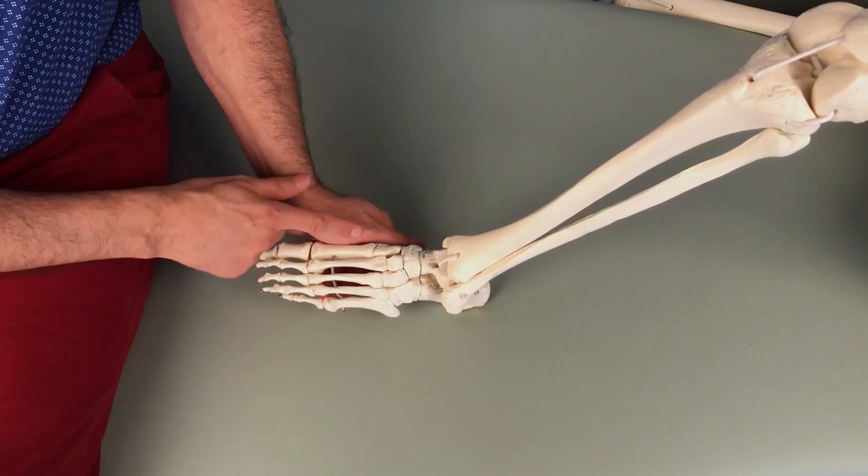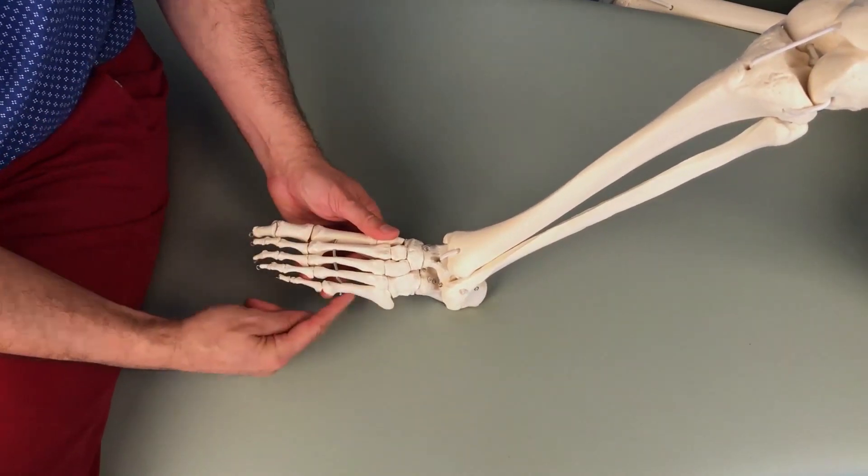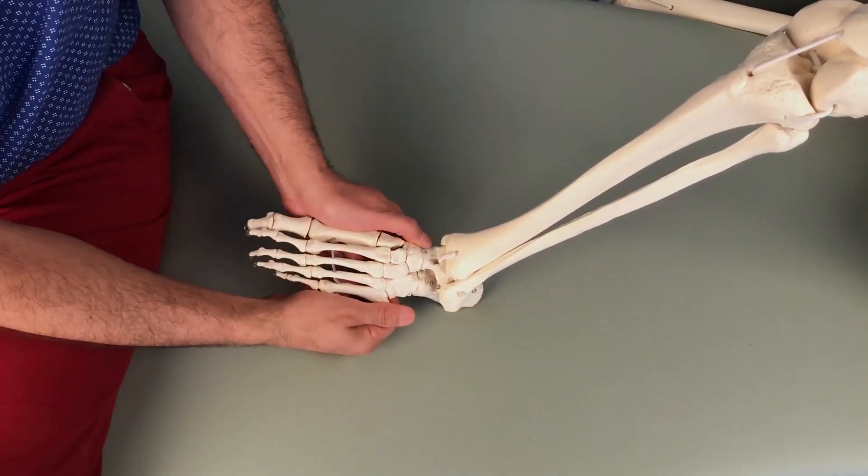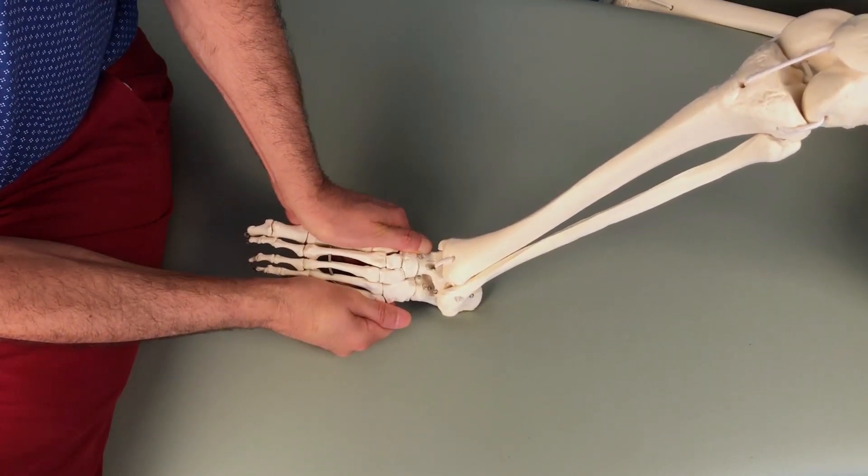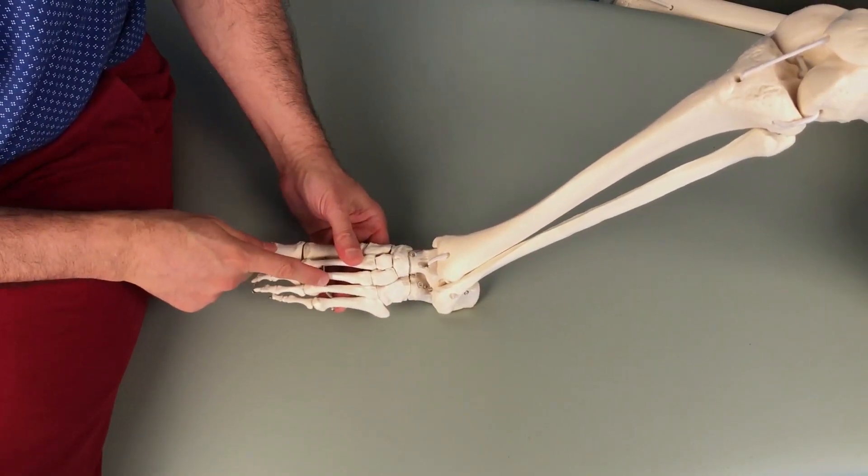I place one hand on the medial side of the first metatarsal, the other hand on the lateral side of the fifth metatarsal, and I compress the metatarsals together, trying to squeeze them together and further compress that nerve.